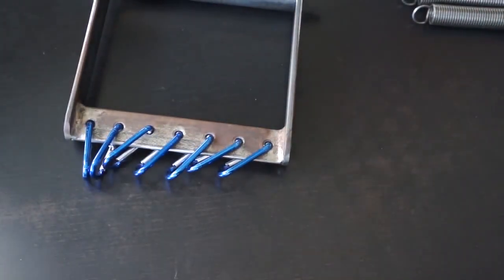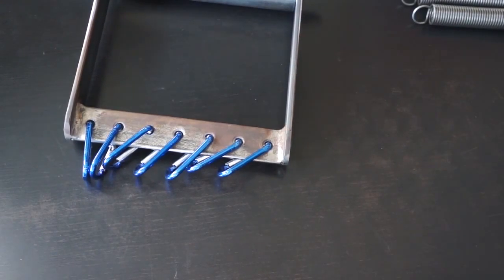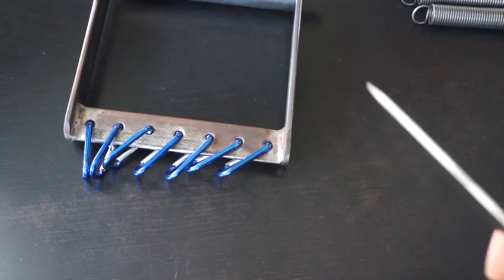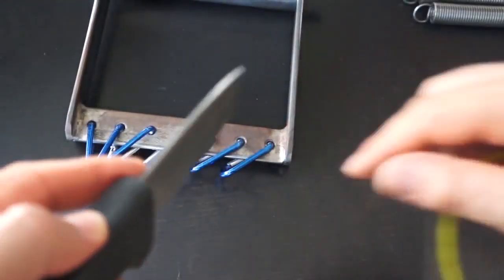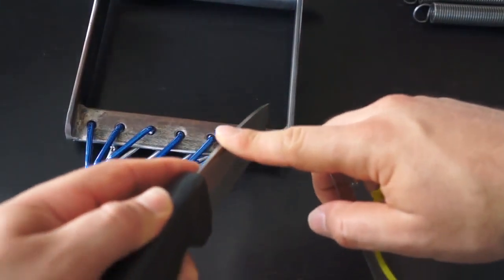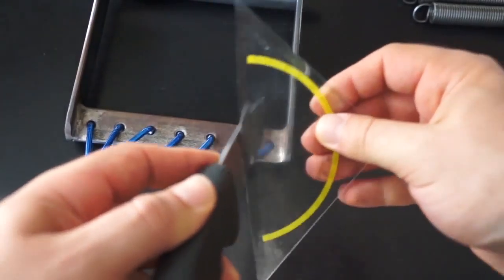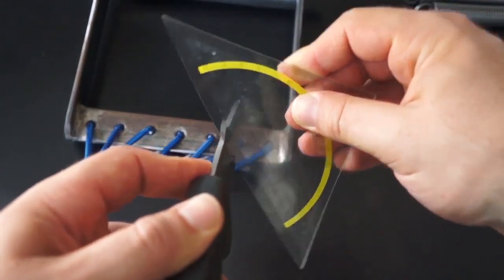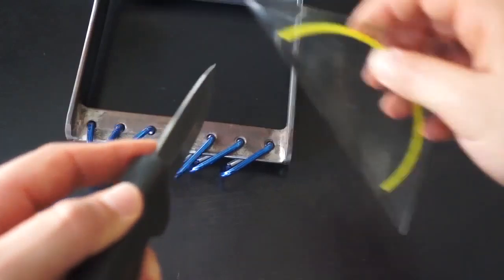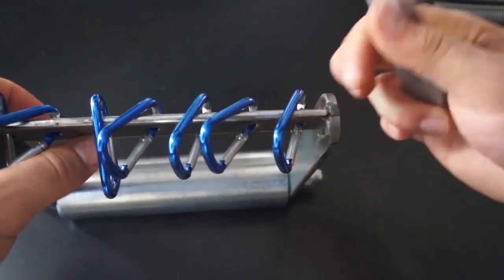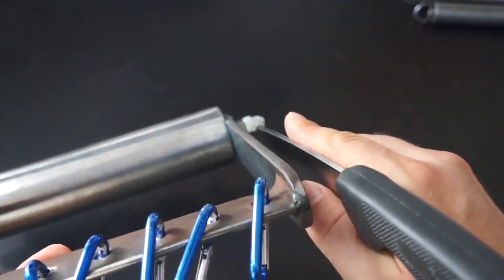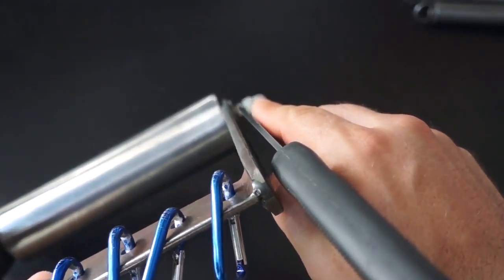Den ich zum Beispiel auf diesem Messerrücken habe. Dieser Messerrücken hat eindeutig einen rechten Winkel hier oben. Das heißt, ich kann nicht ganz so einfach da einmal rumlaufen. Das ist der Unterschied zu diesem Expander.